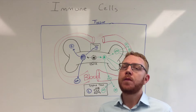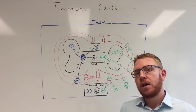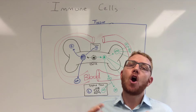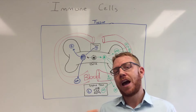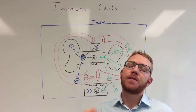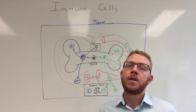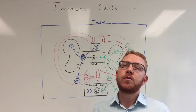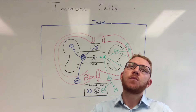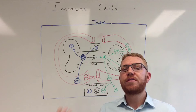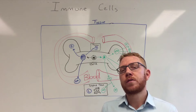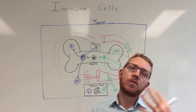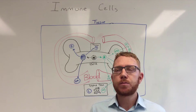Welcome to this short lecture on immune cells. This lecture will build upon the first lecture we did with the overview of the immune system, so if you haven't watched that one I encourage you to have a quick look. When we look at the immune cells of the immune system, they will be broken into two functional groups: those that partake in the innate response and those that partake in the adaptive response.